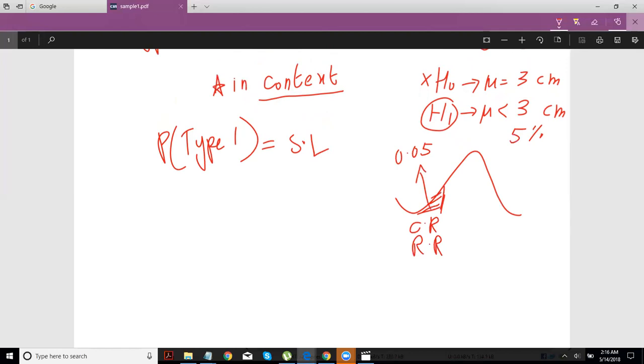You will only reject H0, your null hypothesis, when it falls in the critical region. And hence, your probability of rejecting H0 is itself, as just by definition, the probability of it falling in the critical region and hence getting rejected. It can only get rejected if it falls in the critical region.